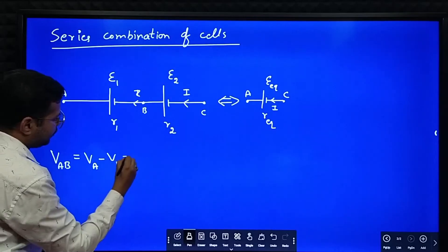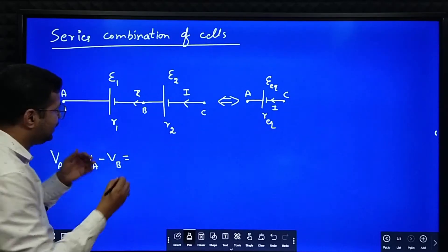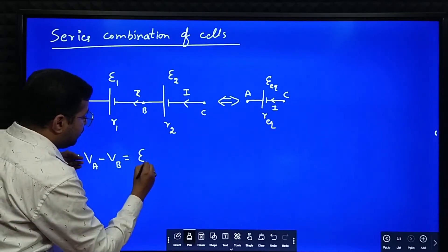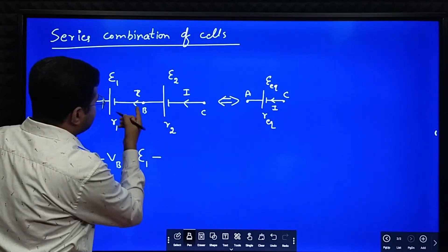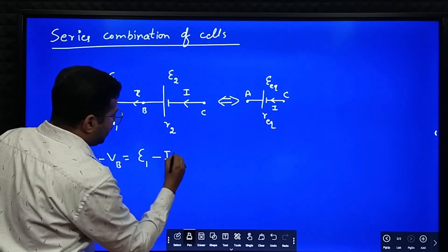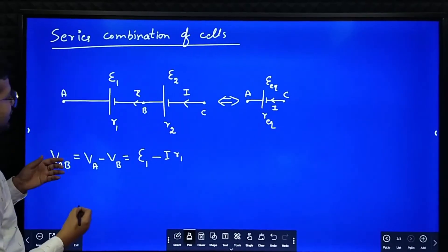So what is that equal to? V is equal to E minus IR: E1 minus I into R1.